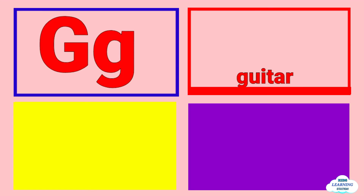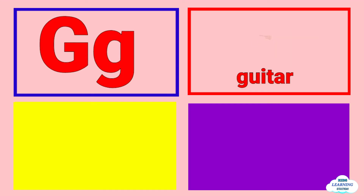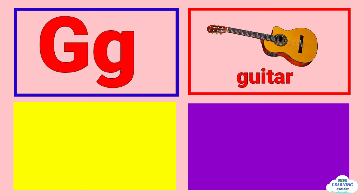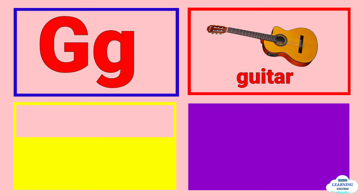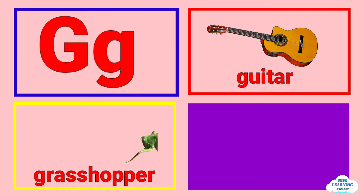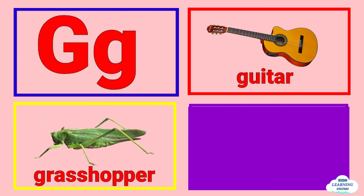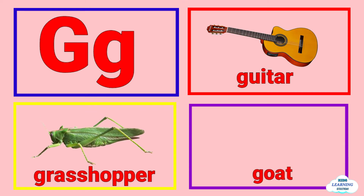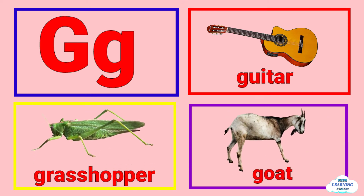G is for guitar, guitar. G is for grasshopper, grasshopper. G is for goat, goat.